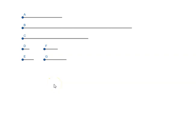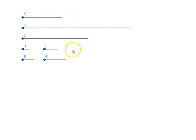Let us look at proposition number 20 of book 8 of Euclid's Elements. The proposition says if one mean proportional falls between two numbers, then the numbers are similar plane numbers. Previously, we have seen that if we have two similar plane numbers, then a mean proportional falls between these two numbers. So now it is the other way around. We are given two numbers A and B, and C is the mean proportional between A and B. We have to show that A and B are similar plane numbers.